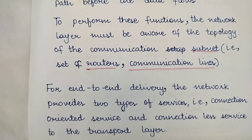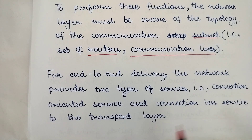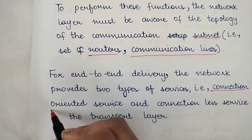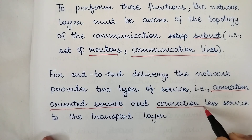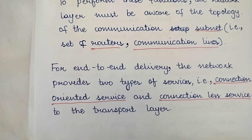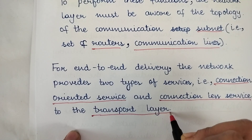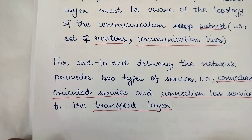For end-to-end delivery — complete delivery from source to destination — the network layer provides two types of services: connection-oriented service and connectionless service. These services are also known as wired and wireless services, and they are provided to the transport layer. For any end-to-end delivery, the network layer provides both connection-oriented and connectionless services to the transport layer above it.